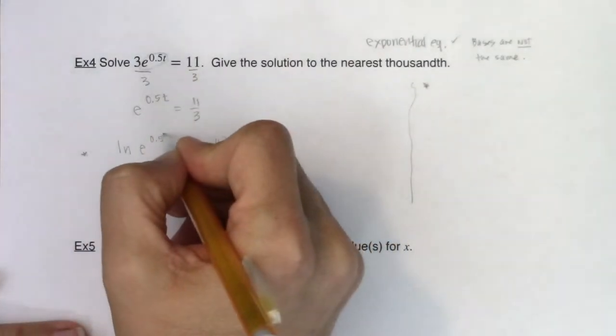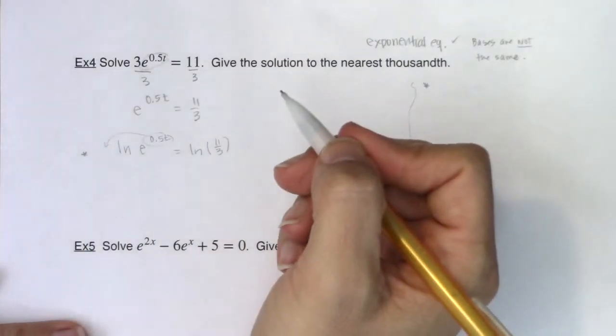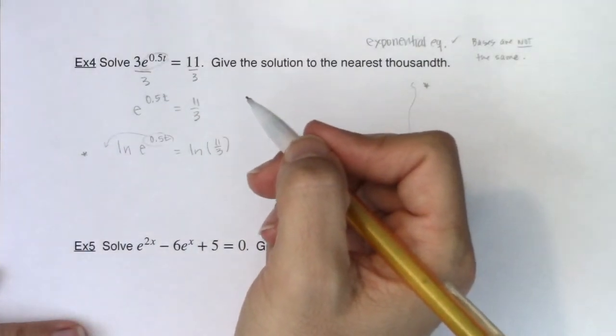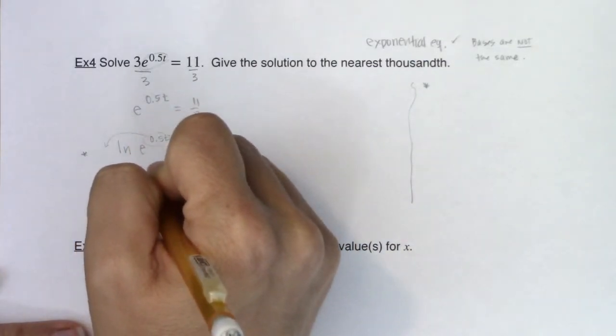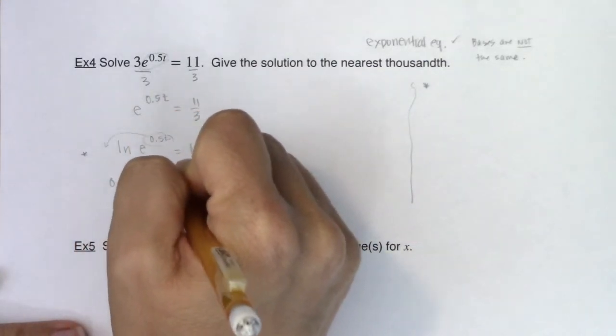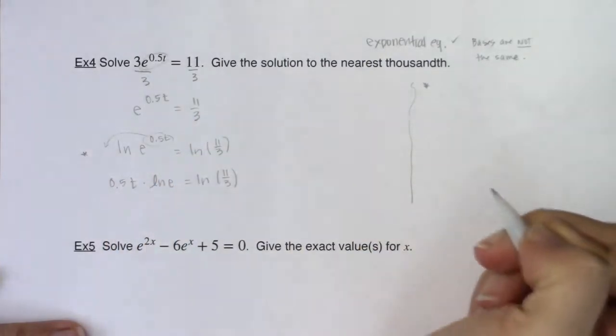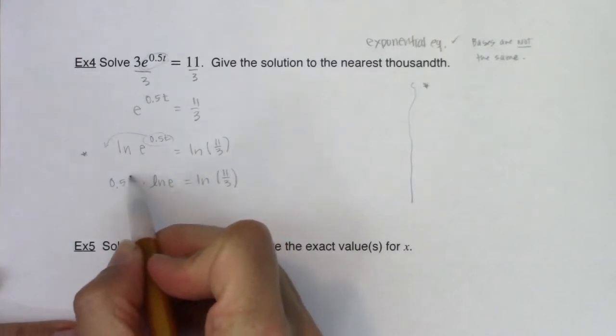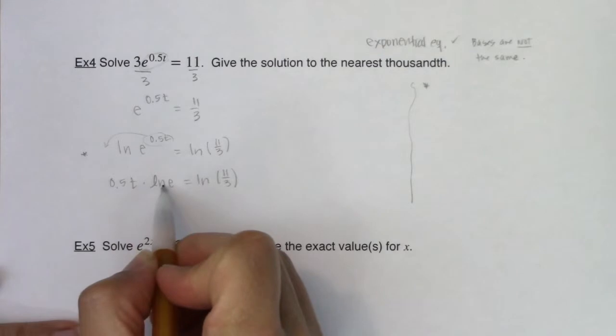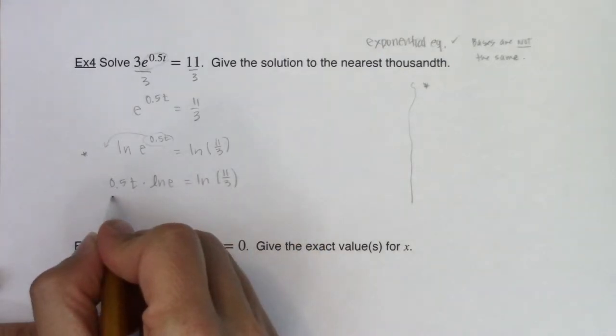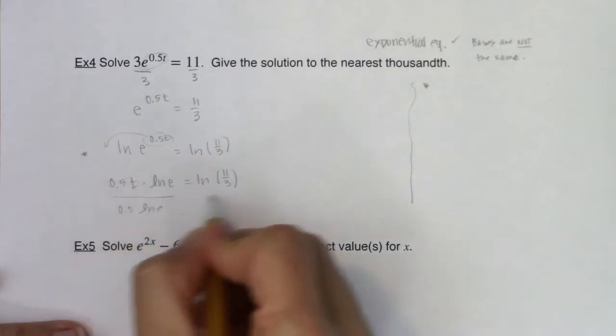So here I would take this exponent and I would bring it down in front as multiplication. That was our power property of logarithms. So I would say 0.5t times the natural log of e is equal to the natural log of 11 thirds. And now I want to solve for t. So I have 0.5 being multiplied here, I have ln of e being multiplied here. So I want to divide both sides of this equation by 0.5 ln e.